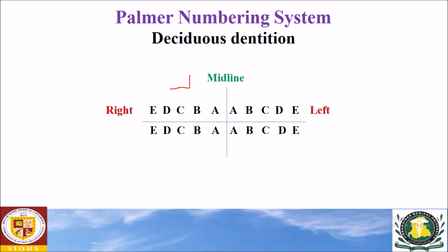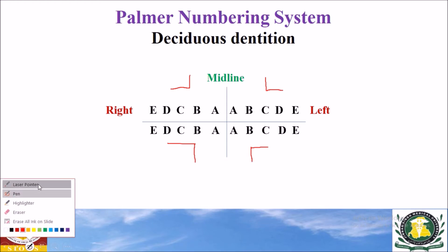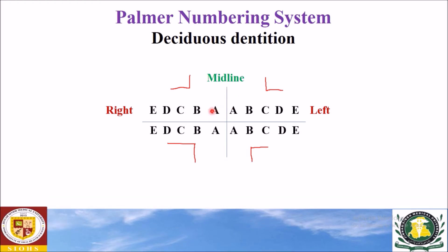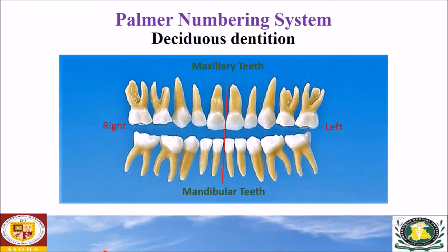In order to identify an individual tooth, we use these symbols together with the alphabets. The first symbol indicates the maxillary right quadrant, the second indicates the maxillary left quadrant, the third indicates the mandibular left quadrant, and the fourth indicates the mandibular right quadrant. Together with each alphabet, we use these symbols to represent each individual tooth.